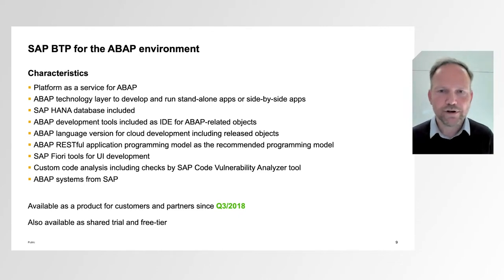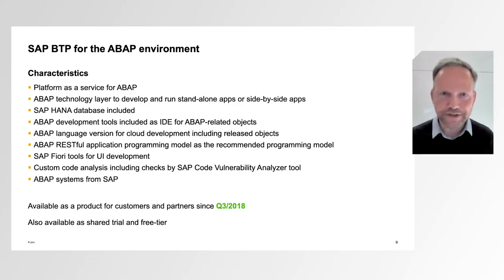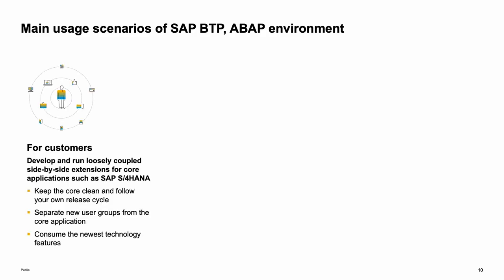The product was launched four years ago, and in the meanwhile Steampunk is also available as a shared trial offering and as part of the three-tier offering of BTP. Steampunk is intended for customers to develop and run loosely coupled side-by-side extensions. This follows the principle of keeping the core clean, with the main advantages of separating new user groups from the core application, having separate release cycles for custom code, and consuming the newest technology features since the platform is upgraded automatically by SAP.